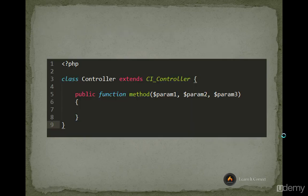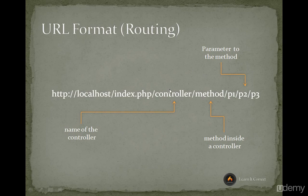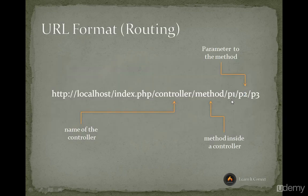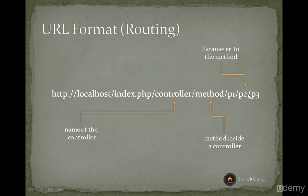This is the code behind the controller. This is how you write the controller class — it extends CI_Controller, which I'll explain in later videos. You have a function called the method name, and those are the parameters: param1, param2, param3. You can give values to these parameters by passing anything in the URL.